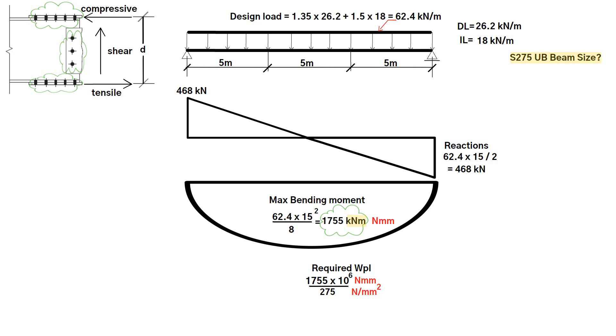The result is going to be in millimeter cubed. The steel section table for plastic modulus is measured in centimeter cubed. So we need to convert the result by 1000 which equals 6382 centimeters cubed.